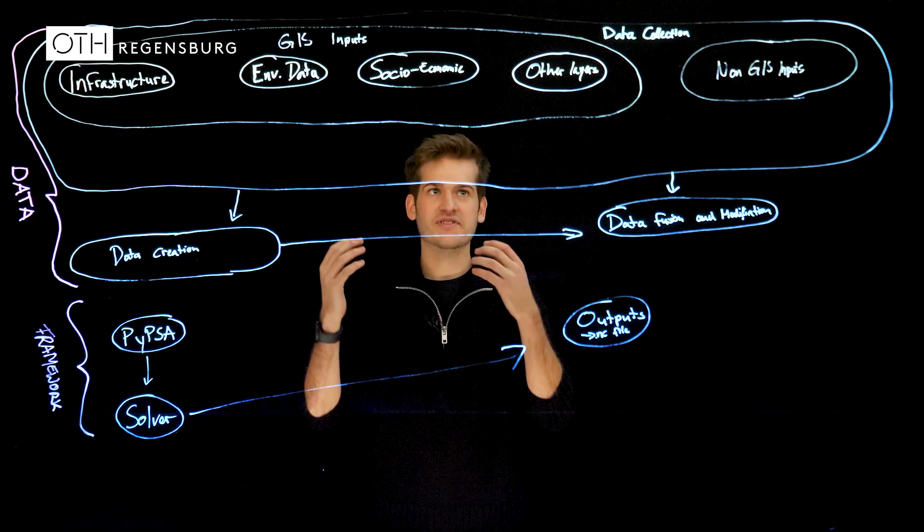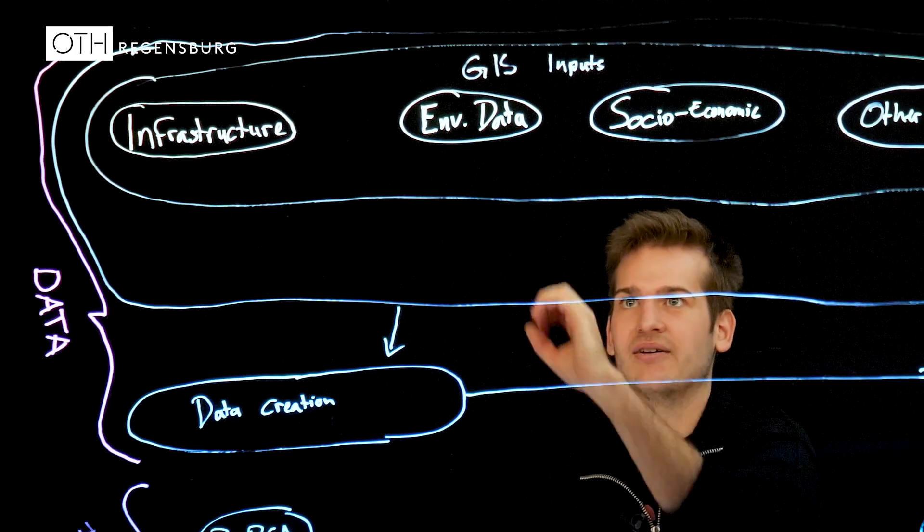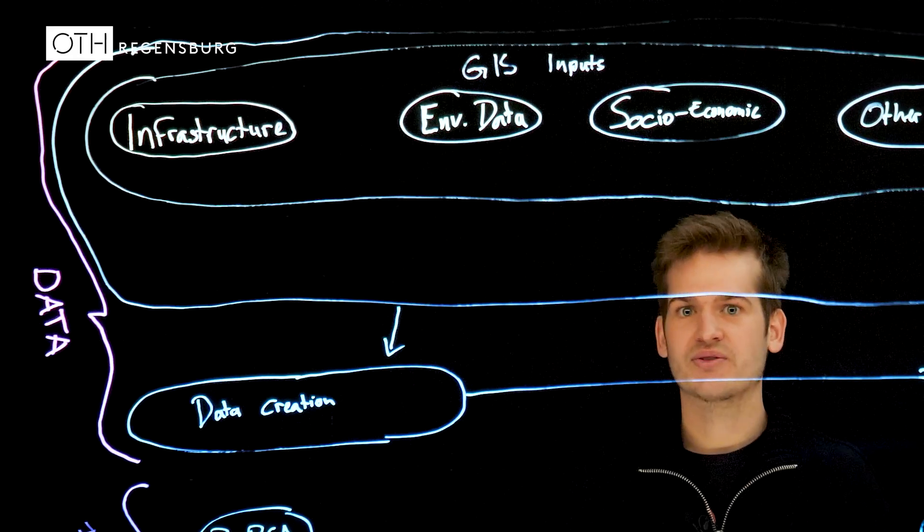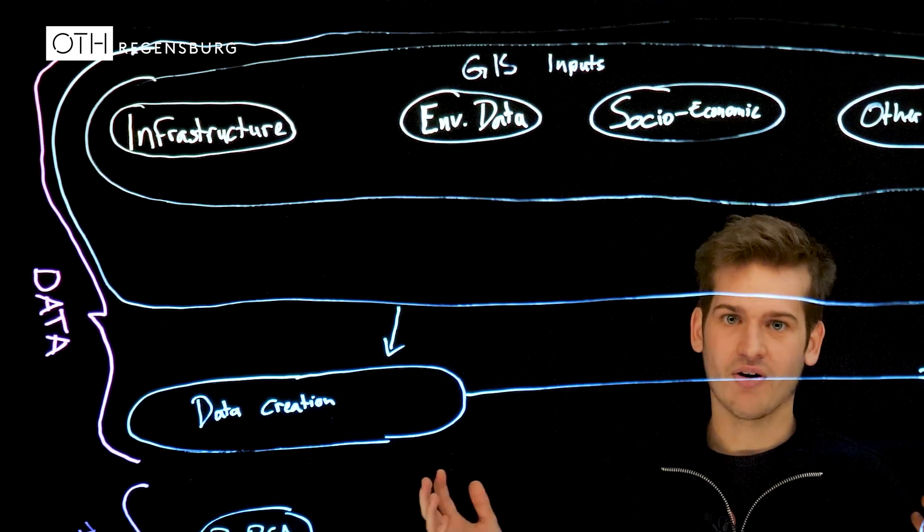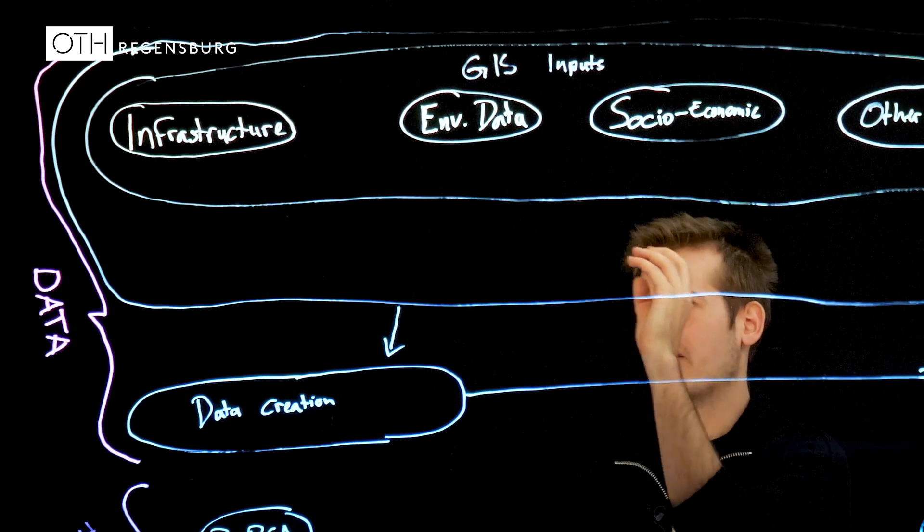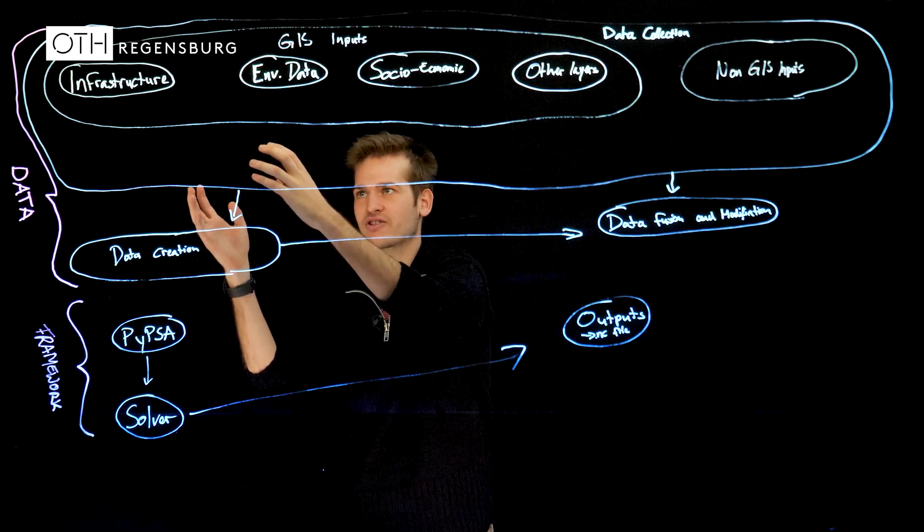So in the first step we collect data on the one hand Geoinformation system data inputs which we are downloading from the internet. Everything open data and open source data and first of all we download stuff like infrastructure data.